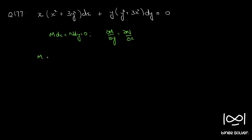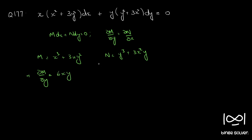Here M is x cubed plus 3xy squared and N is y cubed plus 3x squared y. ∂M/∂y equals 6xy, and ∂N/∂x equals 6xy. That implies ∂M/∂y equal to ∂N/∂x. Therefore the given differential equation is exact.